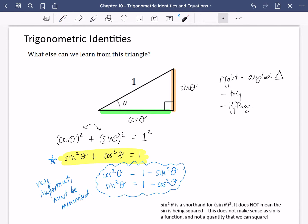My little note down here says that sine squared theta is shorthand for sine theta squared. It does not mean that the sine is being squared. This doesn't make sense, as sine is a function and not a quantity that we can square. The only thing that we can square is the overall thing, because this is a number. Sine is not a number, but sine of theta is a number. And that's the thing that we are squaring.